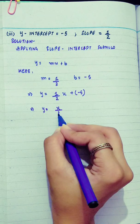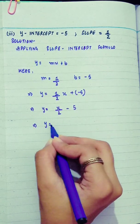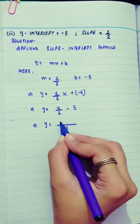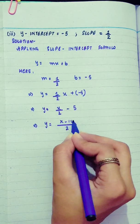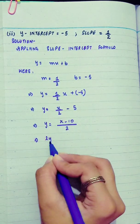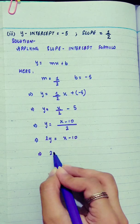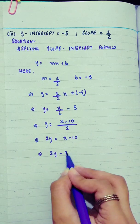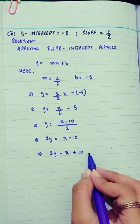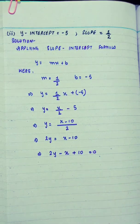This gives y equals x over 2 minus 5. Taking LCM of 2: 2y equals x minus 10. So the equation is 2y minus x plus 10 equals 0.